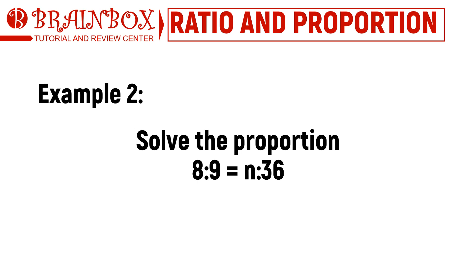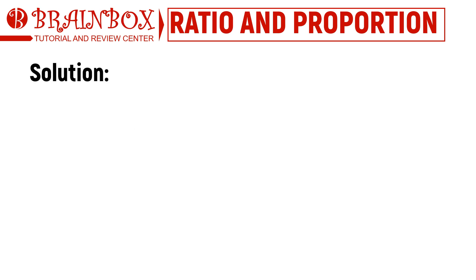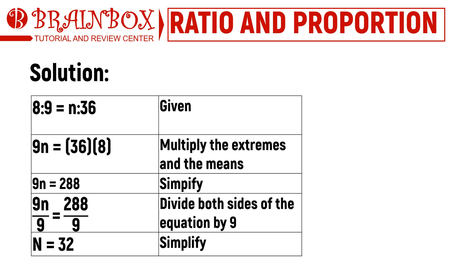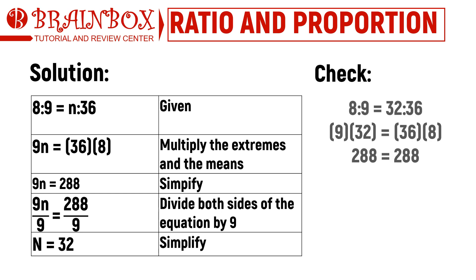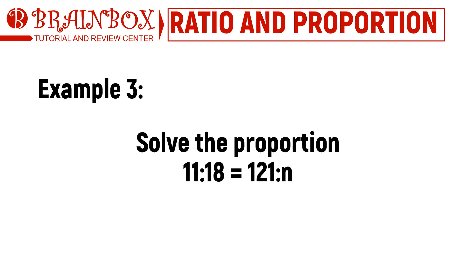Let's have another example: find the value of n in the proportion 8 to 9 equals n to 36. Similarly, we solve by multiplying the extremes and the means, then dividing both sides of the equation by 9, giving us n = 32. We can check by substituting 32 for n — since the product of 9 and 32 is 288, and the product of 8 and 36 is also 288, then 32 is the correct value of n.